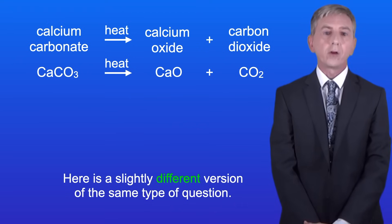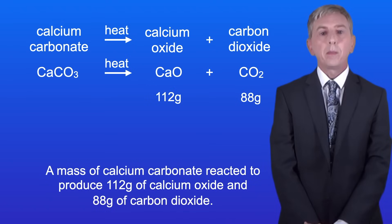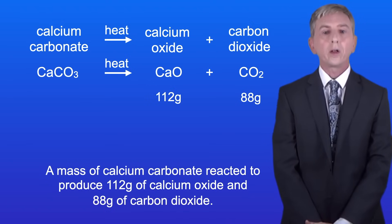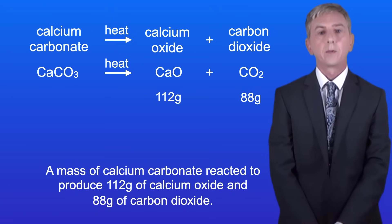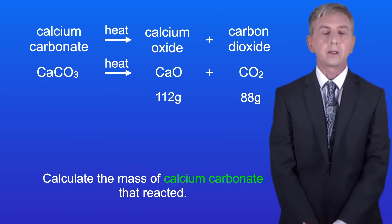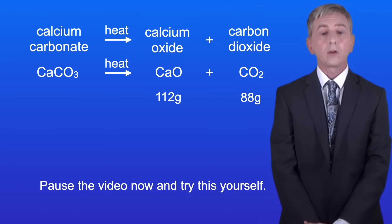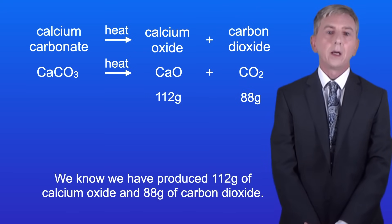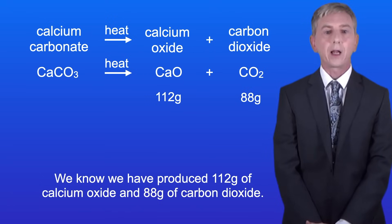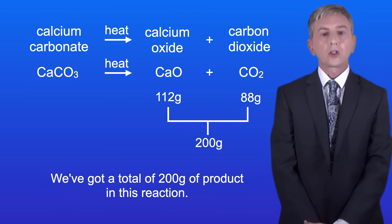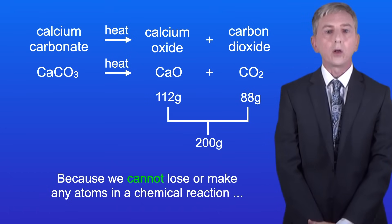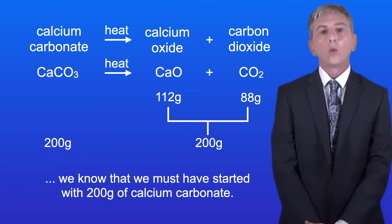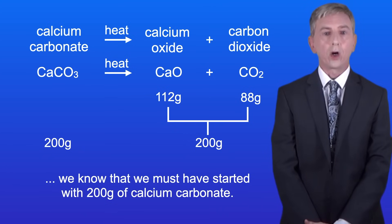Here's a slightly different version of the same type of question. A mass of calcium carbonate reacted to produce 112 grams of calcium oxide and 88 grams of carbon dioxide. Calculate the mass of calcium carbonate that reacted. Pause the video now and try this yourself. We've produced 112 grams of calcium oxide and 88 grams of carbon dioxide, so we've got a total of 200 grams of product. Because we cannot lose or make any atoms in a chemical reaction, we know that we must have started with 200 grams of calcium carbonate.